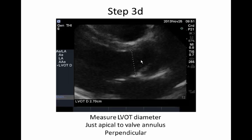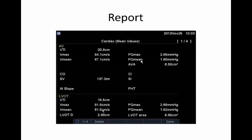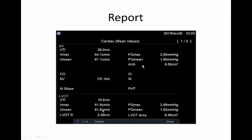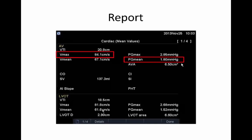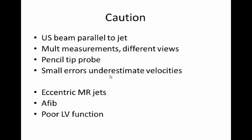Your machine will calculate gradients and functional valve areas for you. Hit the report screen and you should get your aortic valve area — here it's well above 2.5, which is good. You don't get critical until you're down to less than one centimeter squared. Here we've got a mean gradient of 1.8 millimeters of mercury, which is very good. More than 10 is where we start to get worried. If you put a heart rate in, you can also get a cardiac output for hemodynamic assessment.